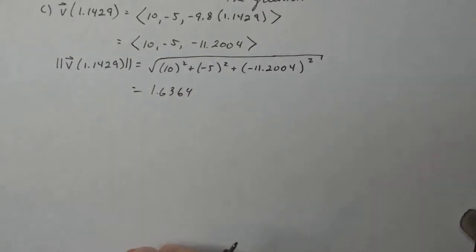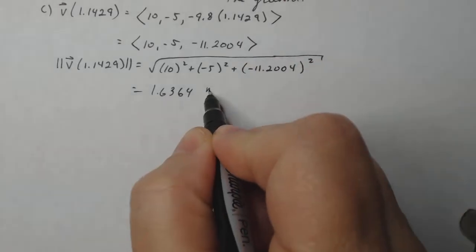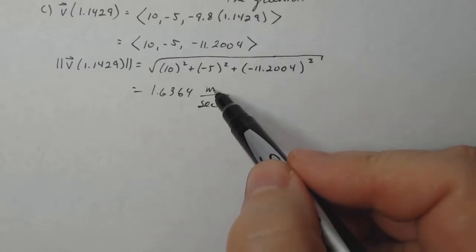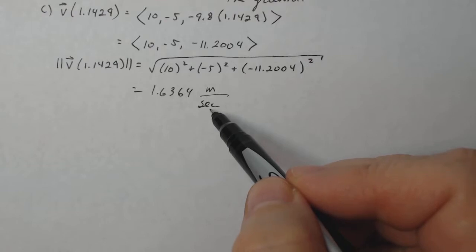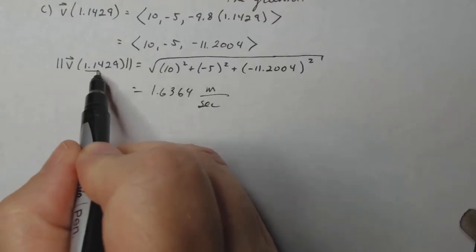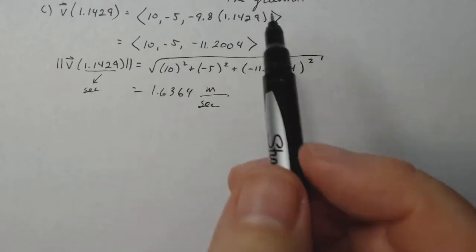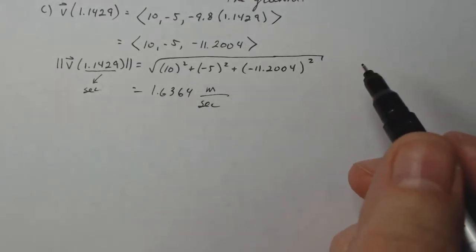And what unit of measure is that? Well, that's velocity. So that's change in meters per second, right? Meters per second. Because my output change is in meters and my input change is in seconds. This is seconds. That's my input. My output is meters. So my unit of measure is meters per second. So 16.364 meters per second.